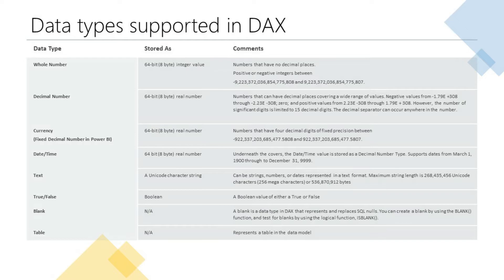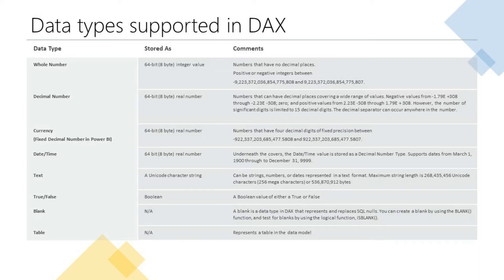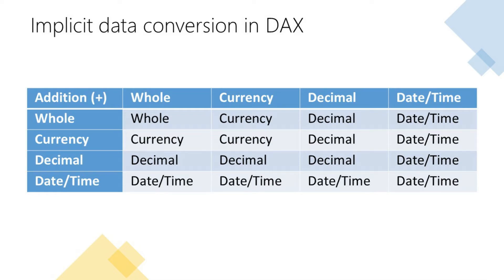Now some DAX functions have special data type requirements. If you pass data as an argument to a DAX function that is not compatible with the data type requirements of that function then DAX will attempt to implicitly convert it to the required data type. However it's entirely possible that DAX will be unable to do this implicit conversion which will result in the function returning an error. The type of implicit conversion that DAX will attempt to perform depends on the operator being used. The following tables show the implicit conversions that take place when the data type in the row is combined with the data type in the column using a particular arithmetic operator.